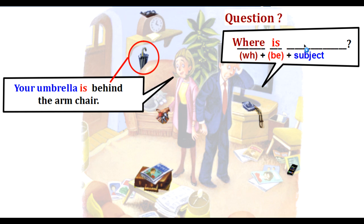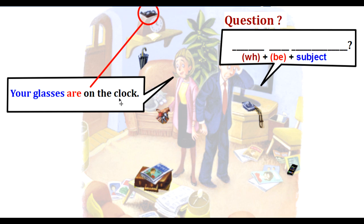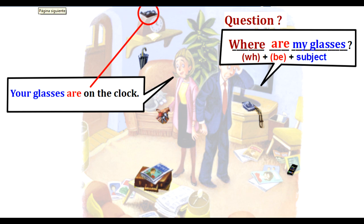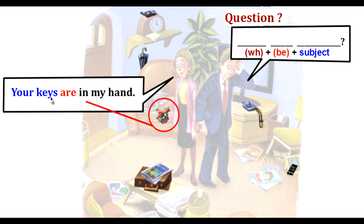Where is my umbrella? Your umbrella is behind the armchair. Your glasses are on the clock — the location question: Where are my glasses? Your glasses are on the clock. And the question for keys: Where are my keys? Your keys are in my hand.